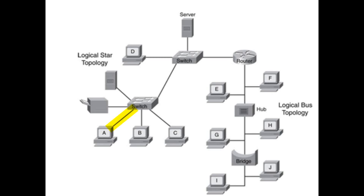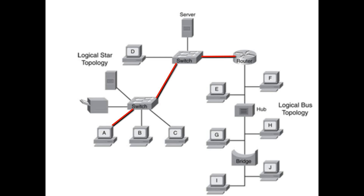Between PCA and a switch, there is a physical and logical point-to-point network. Between that switch and another switch, there is also a physical and logical point-to-point network. And between that switch and the router, there is again both a physical and logical point-to-point network. The interconnections between PCA and the router no longer make a physical point-to-point network, but rather a multi-access network. Logically, however, since each individual link is point-to-point, the sum of its parts means PCA to the router is still a logical point-to-point — what we call a virtual connection, independent of the physical layout.